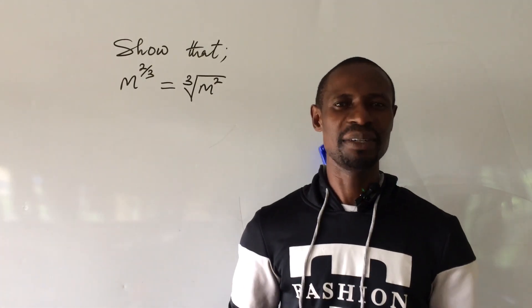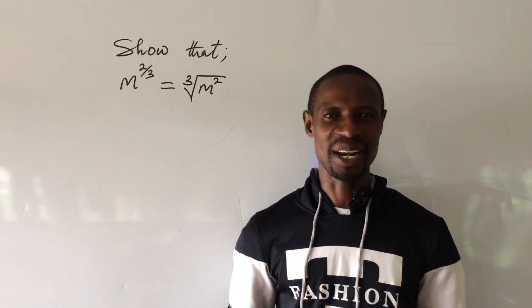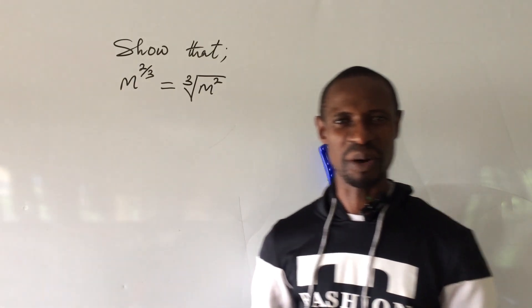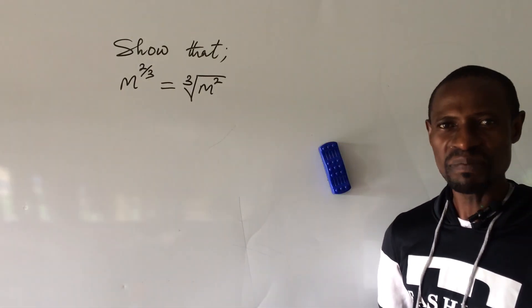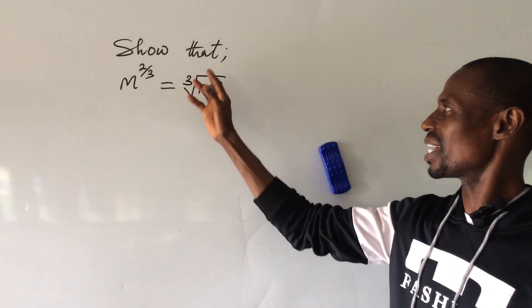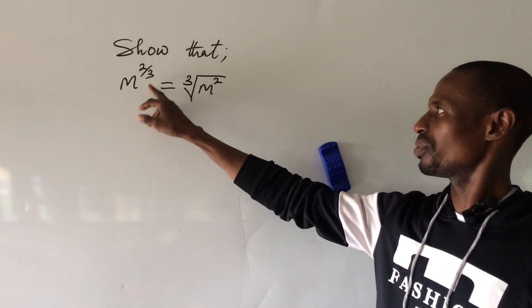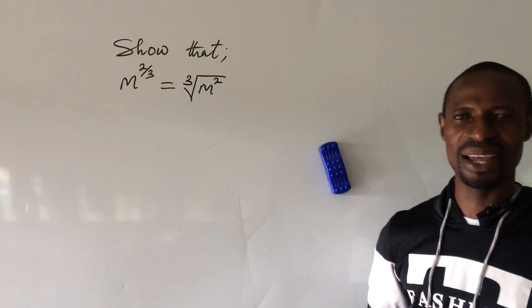We'll have fun learning mathematics all the time. Here we have a question on the board before us. The question looks so simple. The question says show that m to the power of 2 over 3 equals to the cube root of m square.